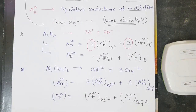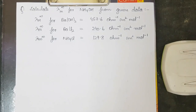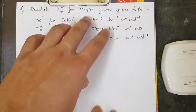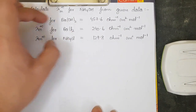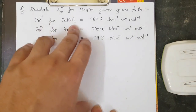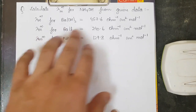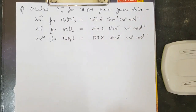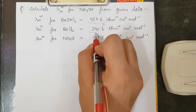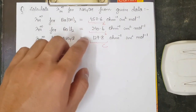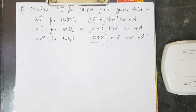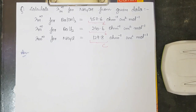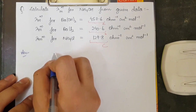Now let's discuss an important question — this is an advanced-level question. We are asked to calculate λm∞ for NH4OH from the given molar conductivity data: λm∞ for Ba(OH)2, λm∞ for BaCl2, and λm∞ for NH4Cl are given. An important tip: whenever λm∞ values for individual compounds are given, assume them to be variables A, B, and C instead of substituting values directly. Substitute values only at the final step — this saves a lot of time.